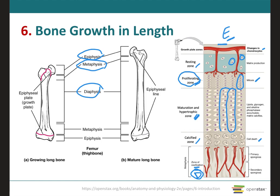The last zone is the zone of calcified cartilage. This final zone of the epiphyseal plate is only a few cells thick and consists mostly of chondrocytes that are dead because the extracellular matrix around them is calcified. Osteoclasts will dissolve the calcified cartilage, and osteoblasts and capillaries from the diaphysis will invade this area. The osteoblasts lay down bone extracellular matrix, replacing the calcified cartilage through endochondral ossification. As a result, the zone of calcified cartilage becomes the new diaphysis, firmly cemented to the rest of the diaphysis.